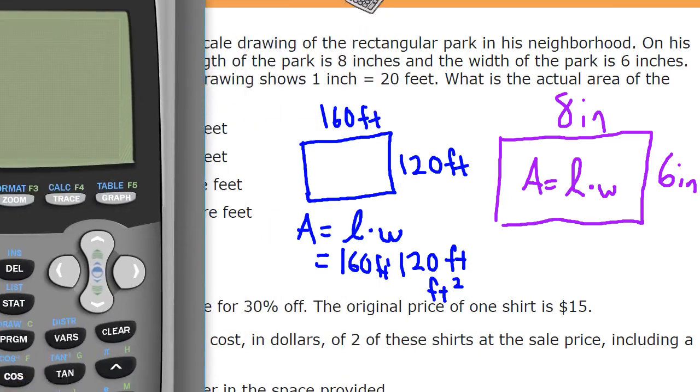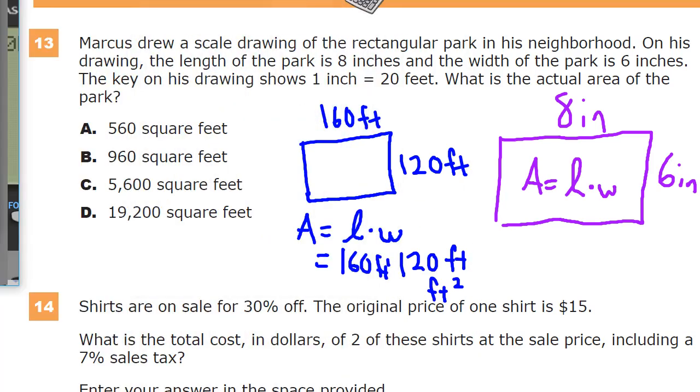See, there it is. And it gives me 19,200 feet squared. So, that is the actual area of the park. So, I might write D there as a reminder that that's the answer that I want to put on my answer sheet.